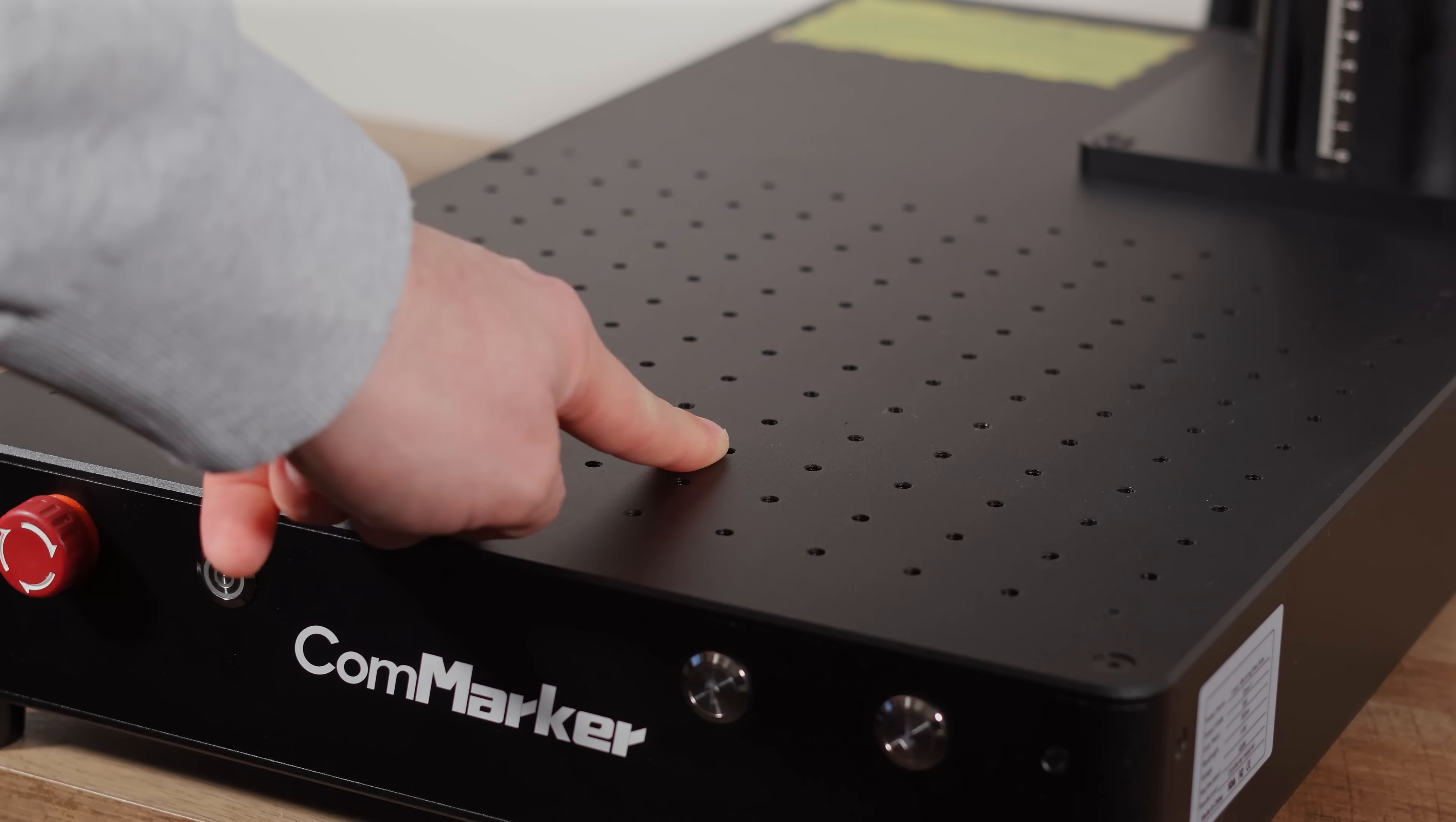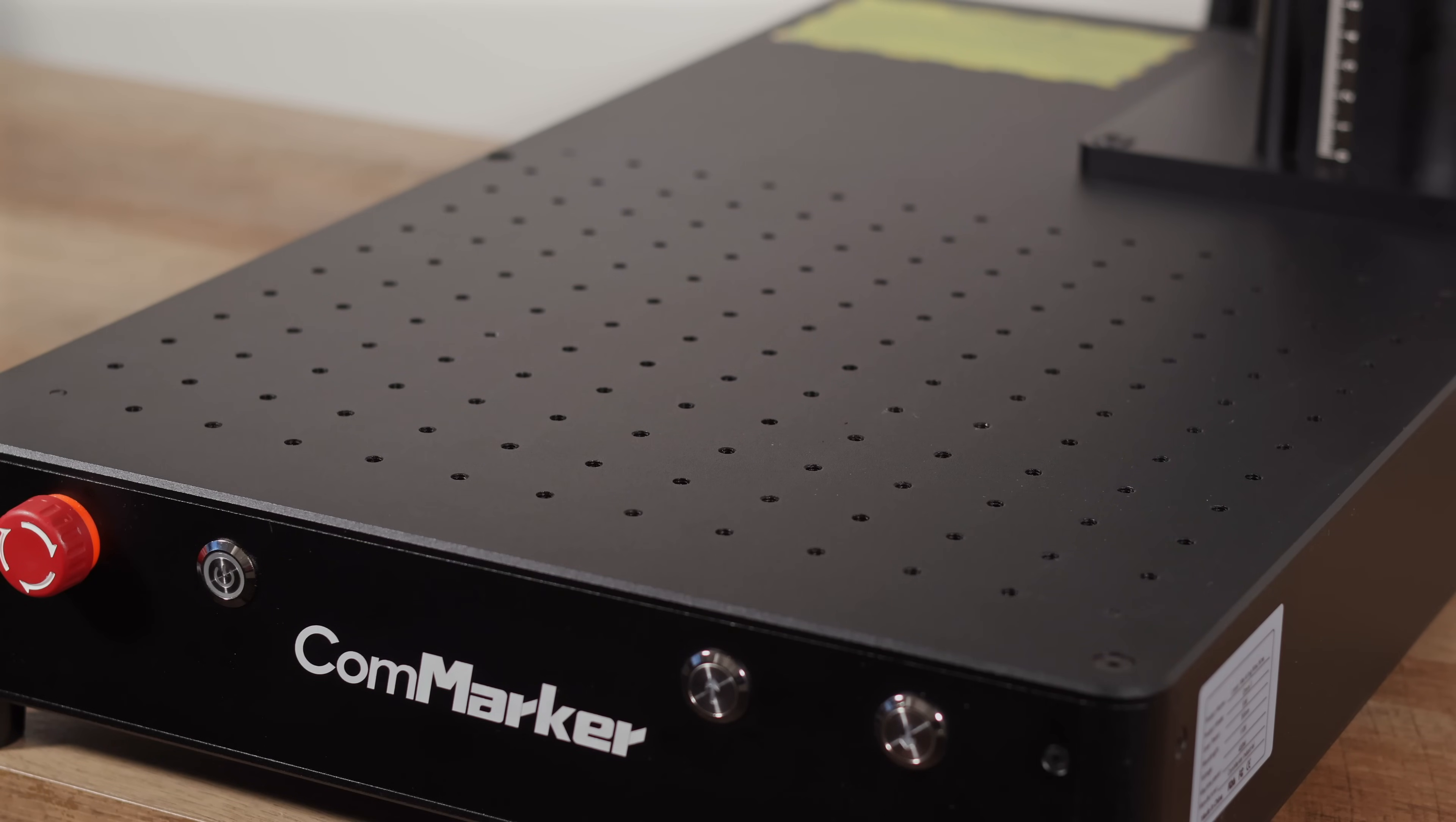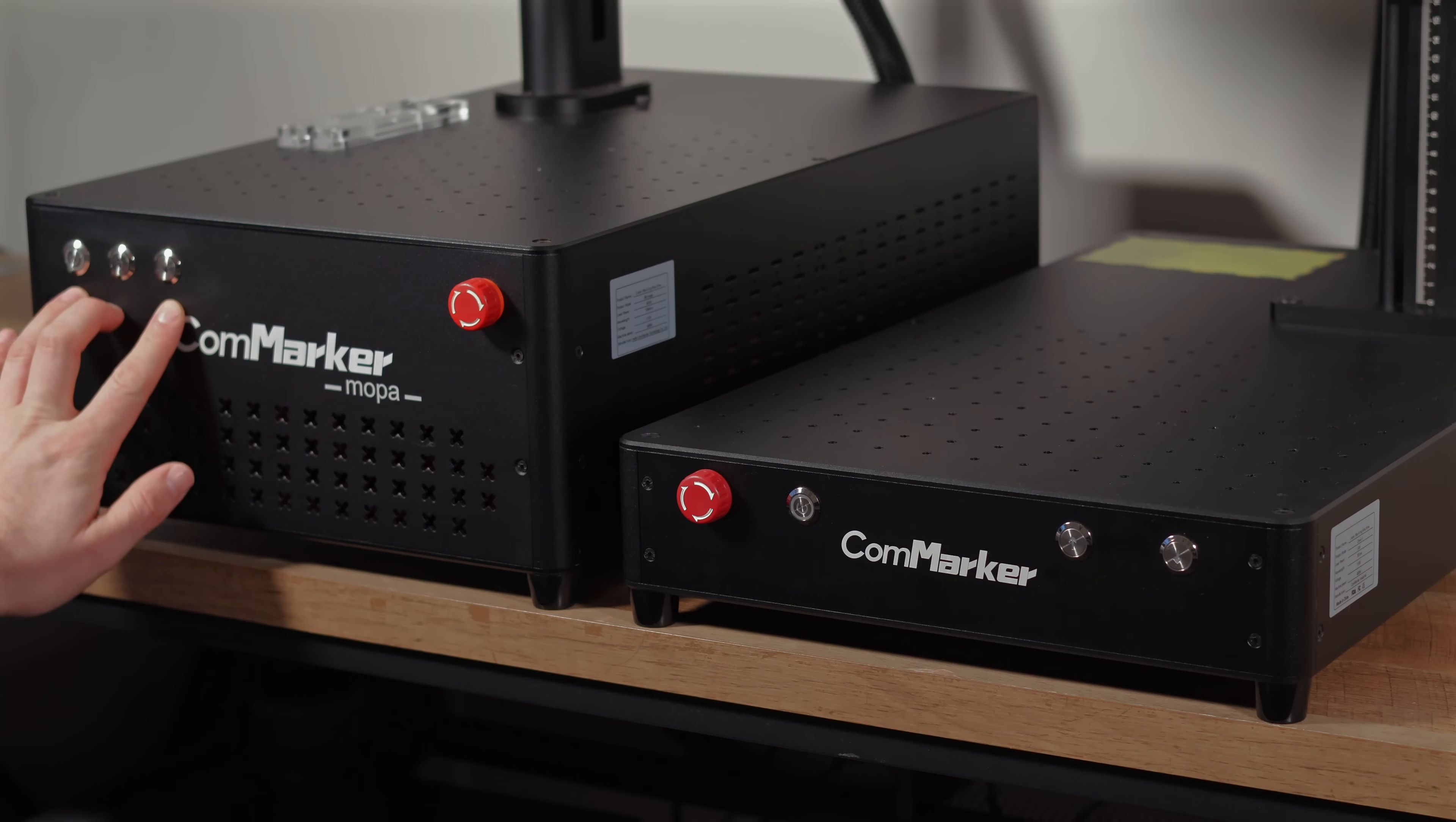The base plate remains the same, featuring identical hole sizes and spacing. This means that any jigs or fixtures you already use with other CommMarker machines should fit seamlessly without any modifications. Definitely a thoughtful touch for users upgrading or expanding their setups.